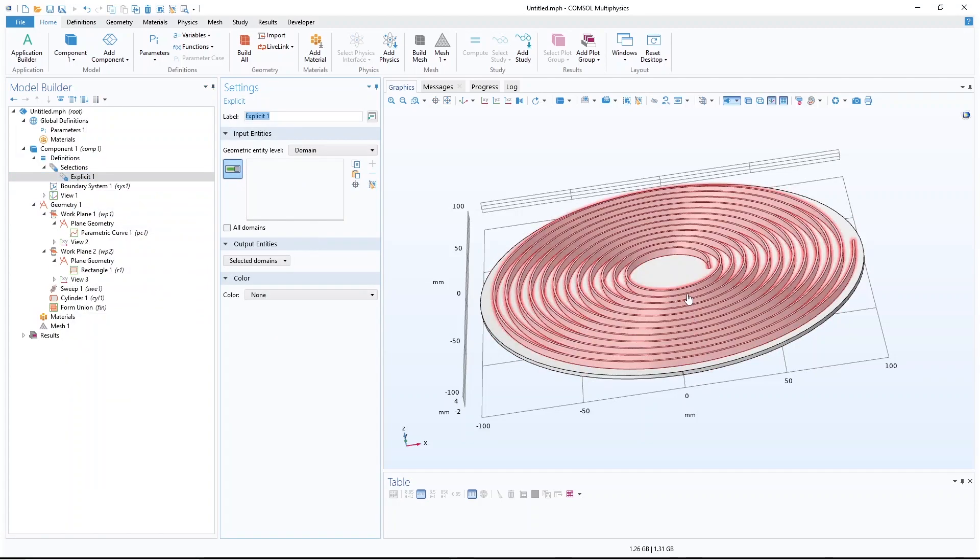Let's say I want to color this domain as yellow. So here in color, you select yellow.